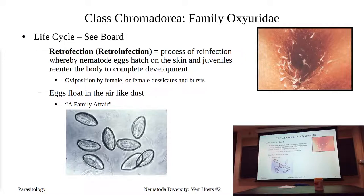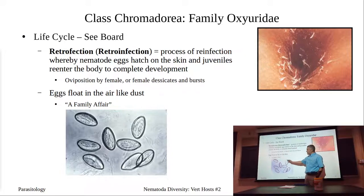When you suspect a child has a pinworm infection, first thing in the morning you can place a piece of cellophane tape over the perianal region and pull it off — the worms typically come out in the evening or at night and would be visible on the tape. The eggs are super light and flattened on one side. If one family member has a pinworm infection, they normally treat the entire family, because it is that easily transmitted.